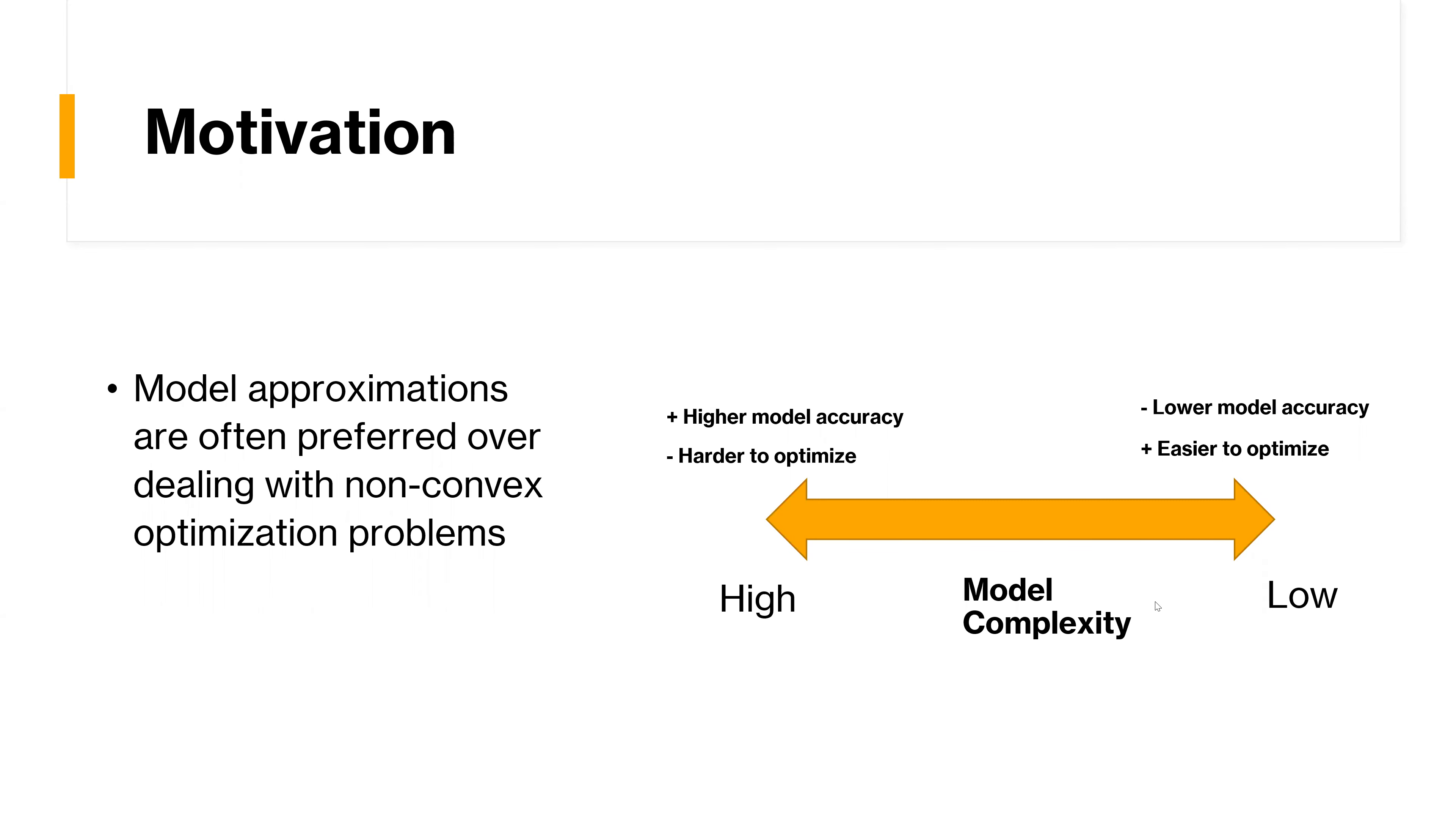And therefore, there is currently a tendency to prefer a lower accuracy model, which is easier to optimize. And therefore, if we're able to develop better methods for dealing with typically non-convex optimization problems, then we have more freedom when we are modeling our systems.